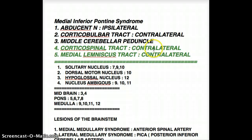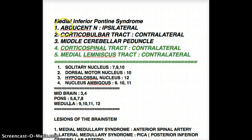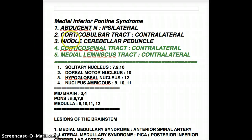The Corticospinal Tract moves from the Medial Pons onto the Medial Medulla, so it is going to be present. Medial Lemniscus is also going to be present in Medial Pons. The Hypoglossal Nerve root is not going to be present. The Abducent Nerve, or Cranial Nerve 6, is going to be present in Medial Pons. The two new structures we have to discuss in Medial Inferior Pontine Syndrome are the Corticobulbar Tract and the Middle Cerebellar Peduncle.